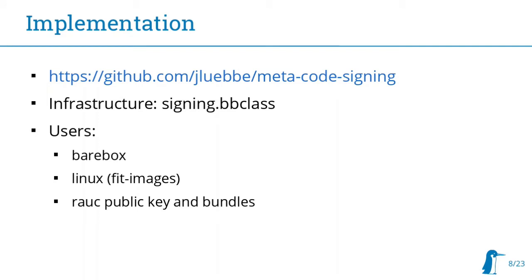So I need an implementation as an OpenEmbedded BB class which handles the signing and key loading part. I put it up on my GitHub. It's used by a few customers of ours and I extracted it from their custom BSPs because I want to move it into something more commonly used. The basic ideas were something we did about one and a half years ago in a project and it worked well, so we ported it over to OpenEmbedded. Currently it has support for barebox, Linux, and RAUC, but the actual code in each component recipe is pretty small.